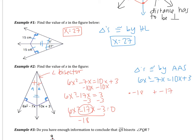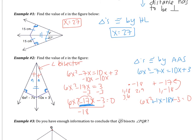Factor pairs of −18 would be 1 and 18, or 2 and 9, or 3 and 6. If I choose positive 1 and negative 18, they add to −17. So we rewrite the middle term — splitting the middle — keeping 6x² and −3, and rewriting −17x as +1x and −18x. Now we split down the middle and factor both sides. On the left, both terms have an x, so factor out x, leaving 6x + 1. On the right, factor out −3, leaving 6x + 1.